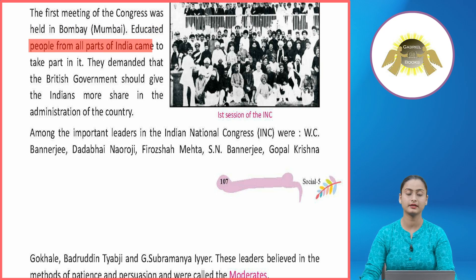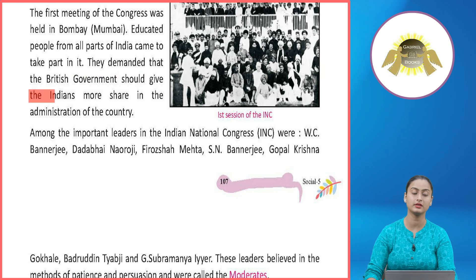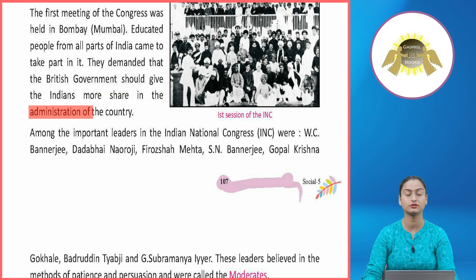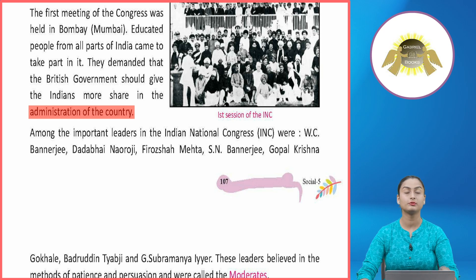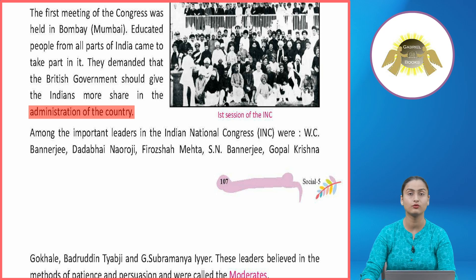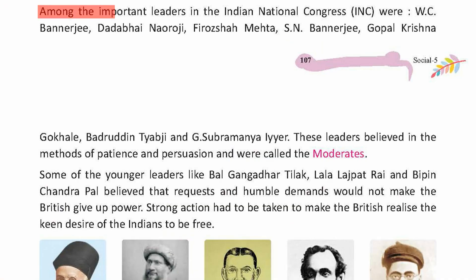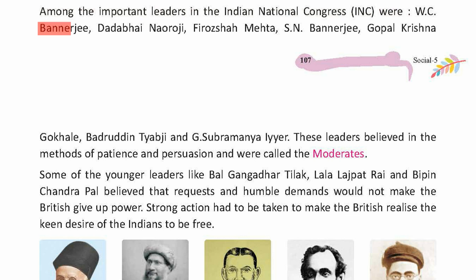The first meeting of the Congress was held in Bombay (Mumbai). Educated people from all parts of India came to take part in it. They demanded that the British government should give the Indians more share in the administration of the country. Alag alag parts of the country se sabse zyada jo educated log the, wo is meeting ka hissa bane.